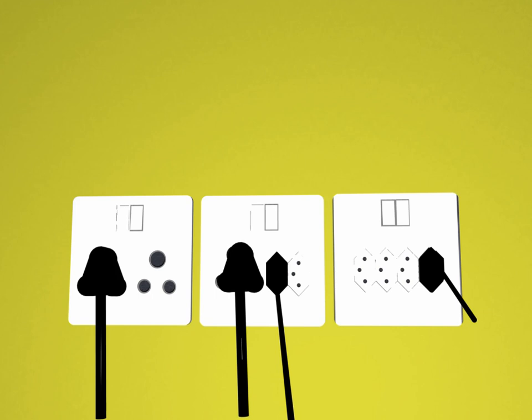However, since 1 January 2013, only type 11 and 12 plugs with partially sleeved line and neutral pins are allowed to be imported and distributed in Switzerland to reduce the risk of electrical shocks.